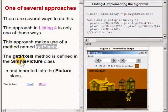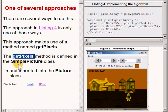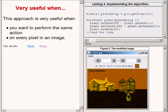The getPixels method is defined in the SimplePicture class and is inherited into the Picture class. Therefore our picture objects contain the method named getPixels. As mentioned before this approach is very useful when you want to perform the same action on every pixel in an image.